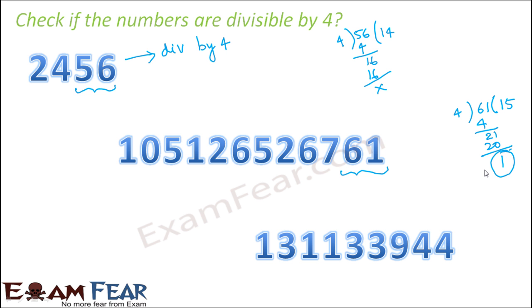Now in this case, what do you see? You have a remainder. So that means 61 is not divisible by 4 and therefore this number as a whole is not divisible by 4.